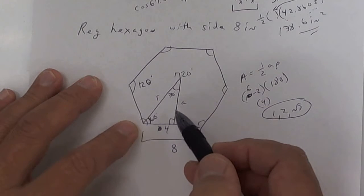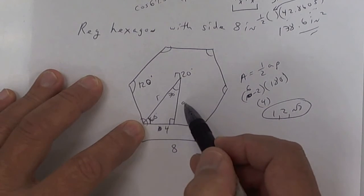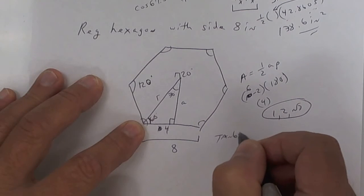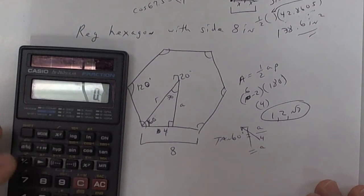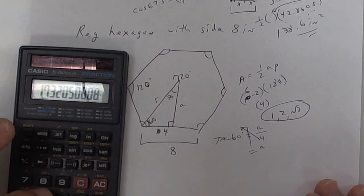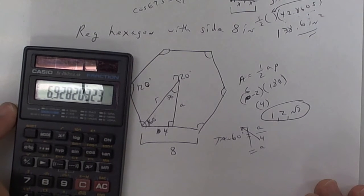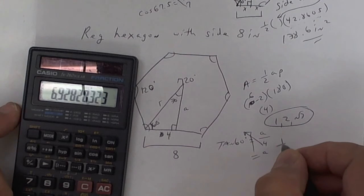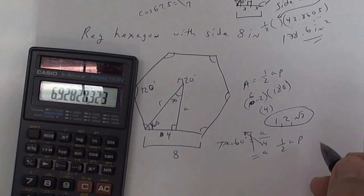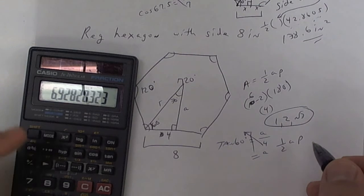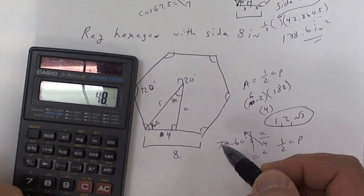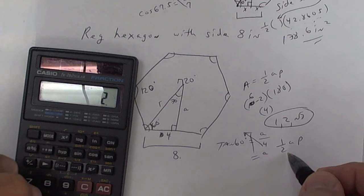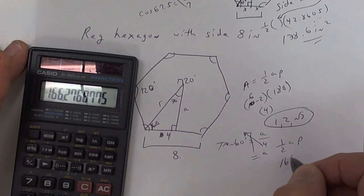To get the apothem, standing here, it's opposite over adjacent. So the tangent of 60 degrees equals opposite over adjacent. The apothem — take tan 60 and then times 4, press equals, and you get the apothem. Then multiply apothem times perimeter for one-half ap. The perimeter: each side is 8 and there are 6 sides, so times 48, which is the perimeter, then divide by 2. I get 166.2 square inches.